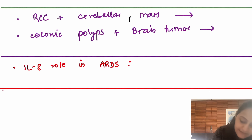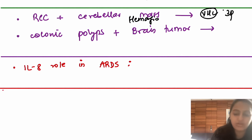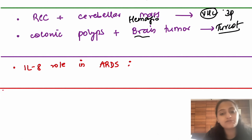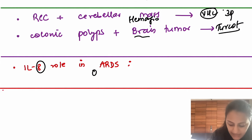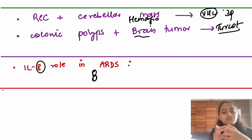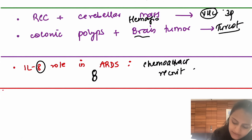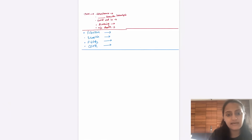Renal cell carcinoma with cerebellar hemangioblastoma indicates Von Hippel-Lindau syndrome — chromosome 3p. Colonic polyps with brain tumor — the brain wearing a turban — is Turcot syndrome. Interleukin-8 in ARDS acts as a chemoattractant, recruiting neutrophils — IL-8 recruits neutrophils in ARDS.